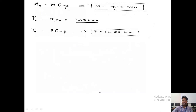With Mn = 4 mm, calculate the transverse module: M = Mn / cos(beta) = 4 / cos(26°) = 4.45 mm. Calculate the normal pitch: Pn = π × Mn = 12.56 mm. The transverse pitch P = Pn / cos(beta) = 13.97 mm.